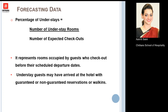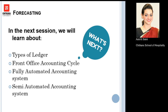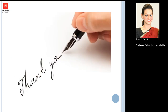An understay is the opposite of an overstay — when a guest checks out before their scheduled departure date. The guest may have had a guaranteed, non-guaranteed reservation, or been a walk-in, but checked out before their scheduled departure. The formula for percentage of understays is: number of understay rooms divided by the number of expected checkouts.